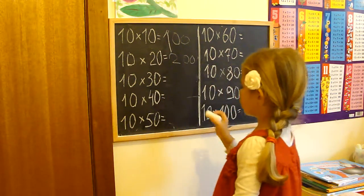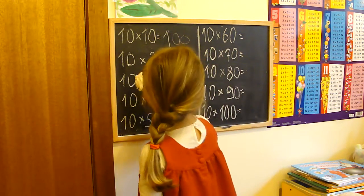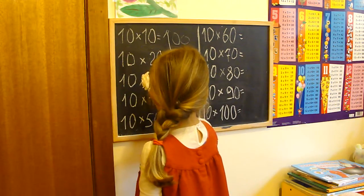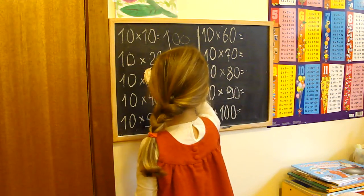Next one. 10 times 30 is 300. Very good.